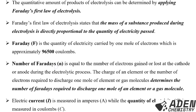The number of Faradays, written as small letter n, is equal to the number of electrons gained or lost at the cathode or anode during electrolysis. The charge of an element, or the number of electrons required to discharge one mole of an element or gas molecule, determines the number of Faradays required to discharge one mole of that element or gas molecule.